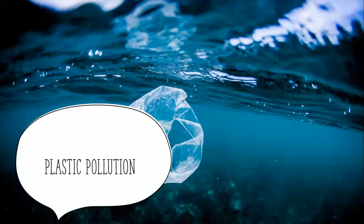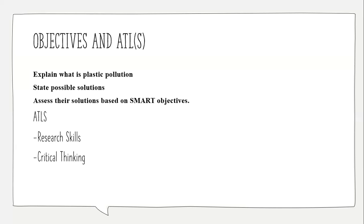The last class will be based on plastic pollution. We're going to discuss and explain what plastic pollution is, and you're going to state possible solutions to reduce it that are not commonly discussed — so you need to think outside of the box. Finally, because we want to relate how SMART objectives are applicable everywhere and not just to personal and academic goals, you're going to look at those solutions and assess whether they are specific, measurable, achievable, realistic, and time specific.